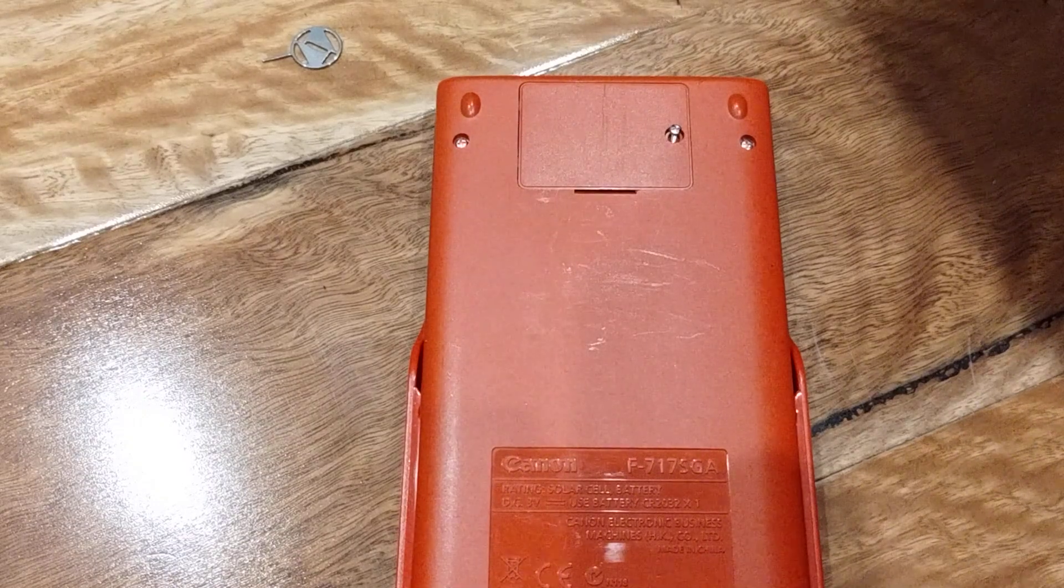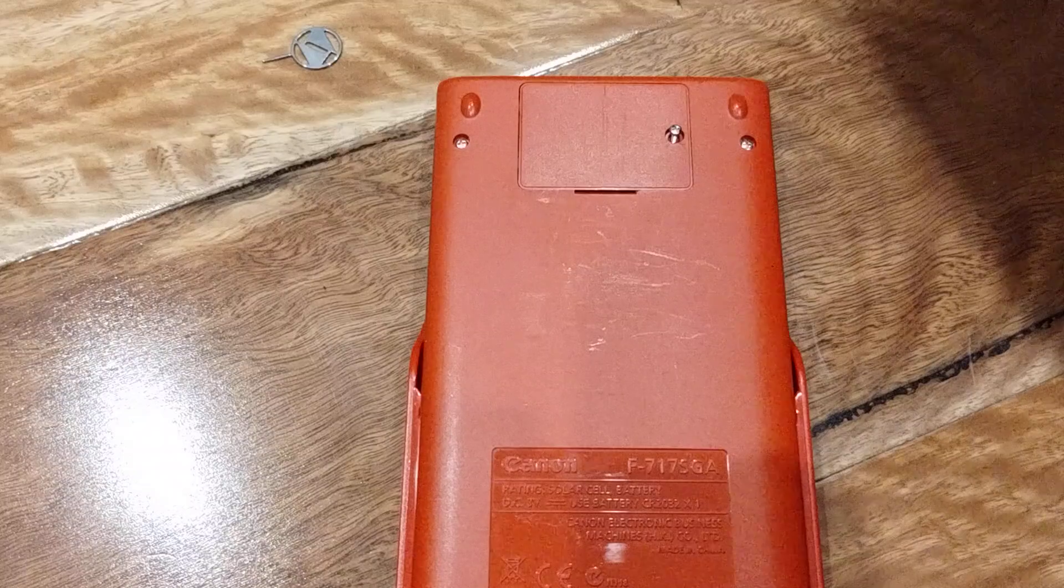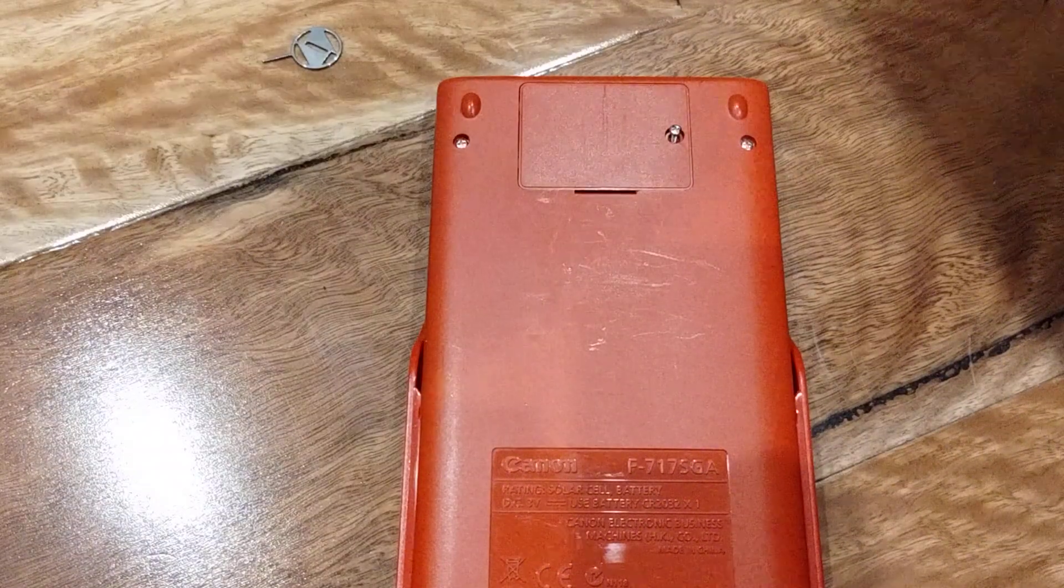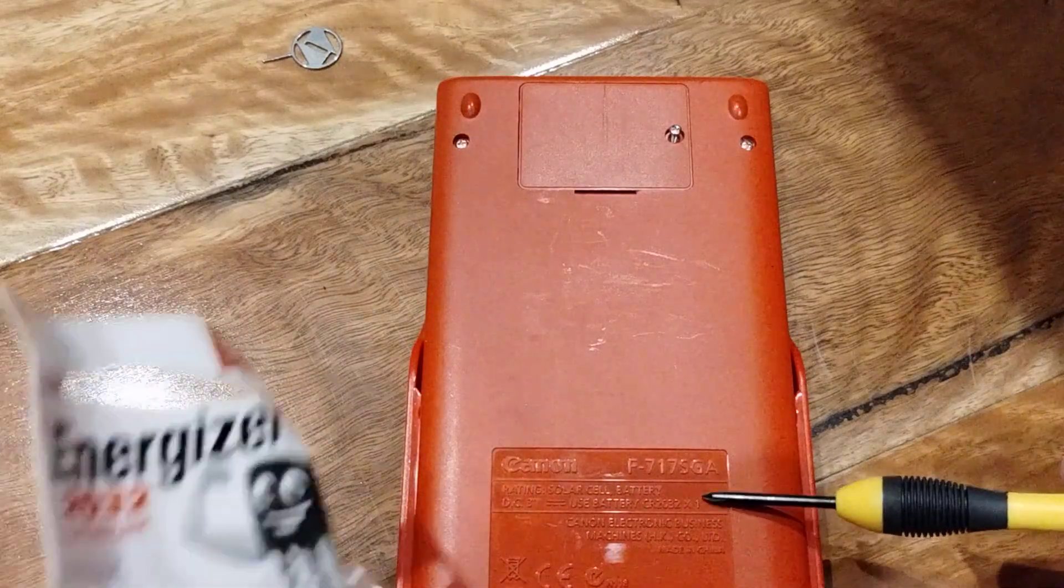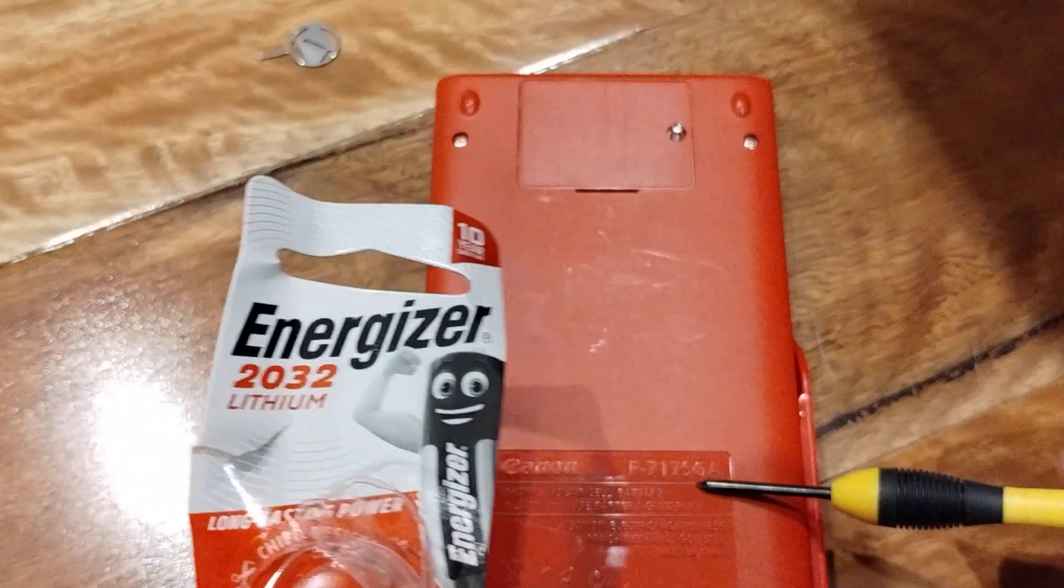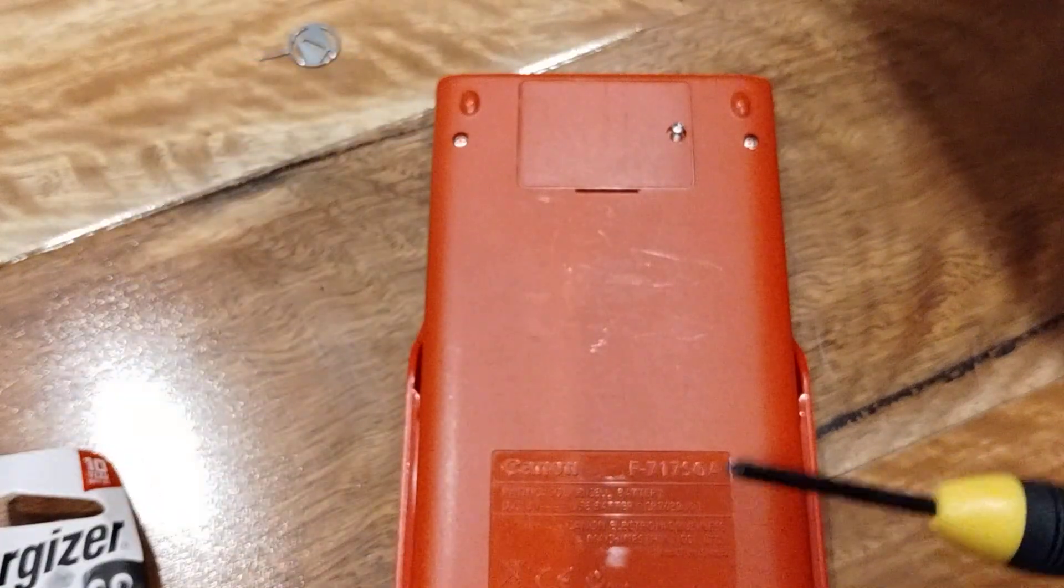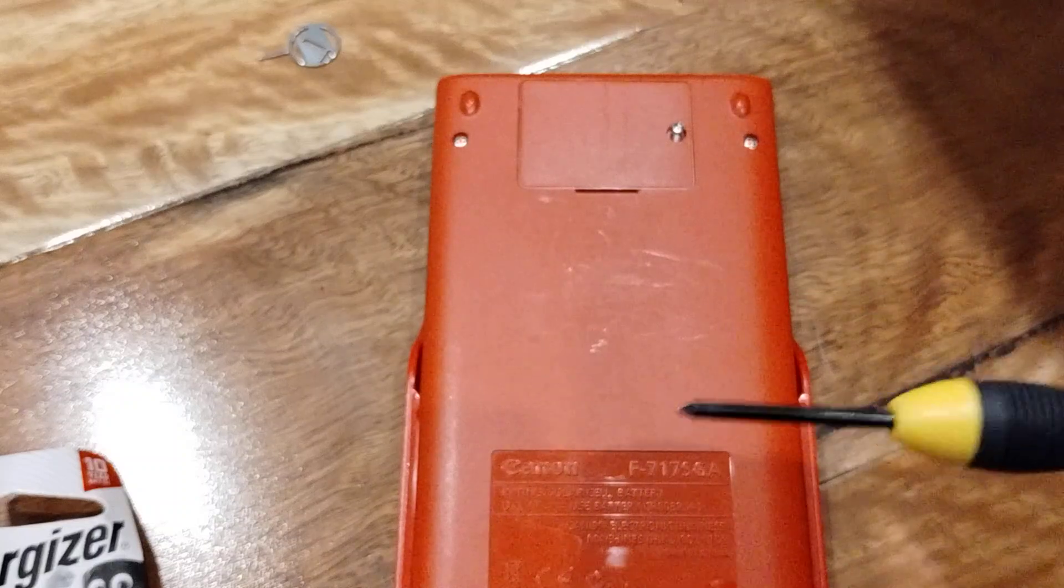Today I'll be replacing the battery on a Canon F-717 SGA calculator. You'll need a CR2032 button battery and a precision screwdriver, like the small types you use to change the screws on your spectacles or glasses.